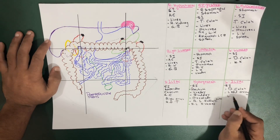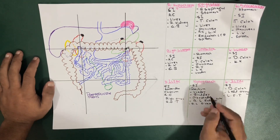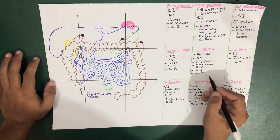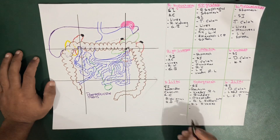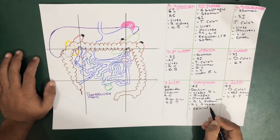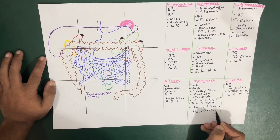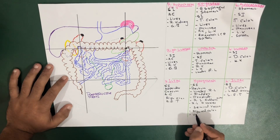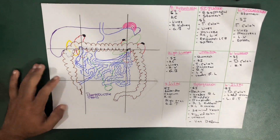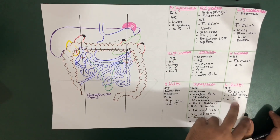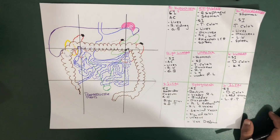The right fallopian tube is in the right iliac region and the left fallopian tube in the left iliac region. Right and left ureters are also present here. Other structures in the hypogastric region include seminal vesicles in males, sigmoid colon, urinary bladder, uterus in females, and vas deferens. Most reproductive structures are in the hypogastric region, while the fallopian tubes arise from the left and right iliac regions.